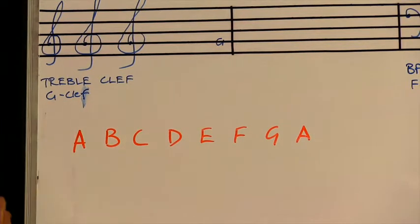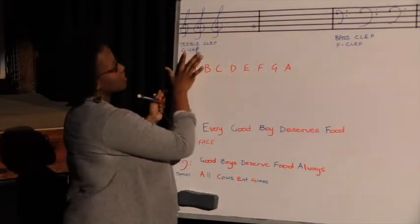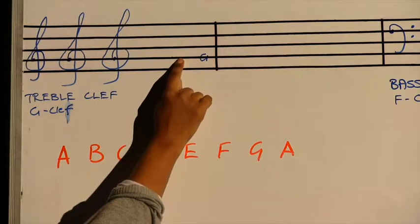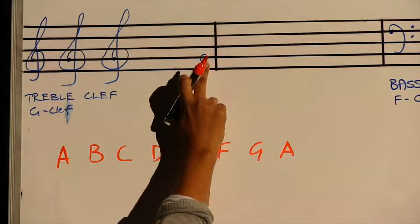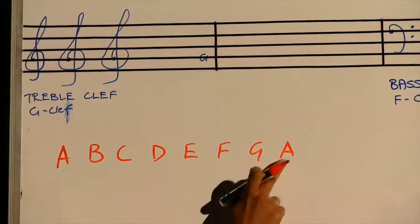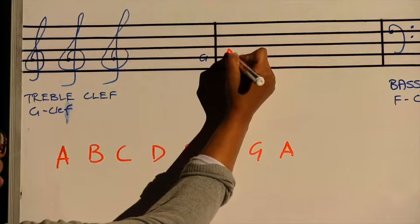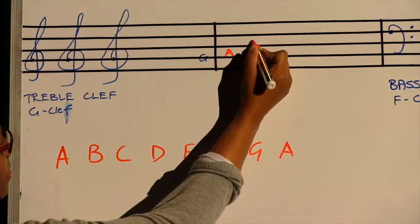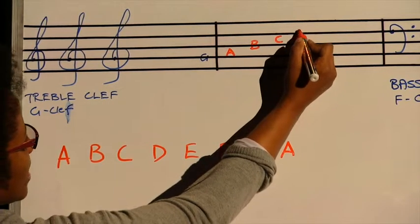With the clefs now, as I said, that is our G line on the treble clef. That means that the spaces that follow or the lines that follow from that G, as I said we start counting from A again. Then the space is going to be A, the line B, the space C, the line D, space E, the line F.